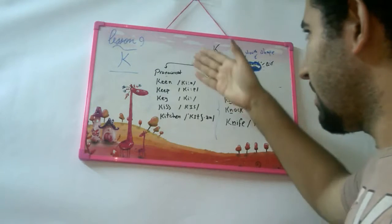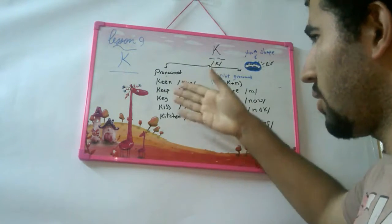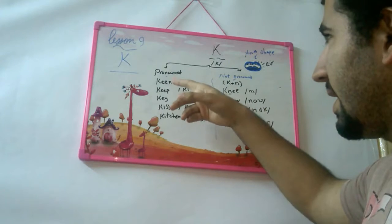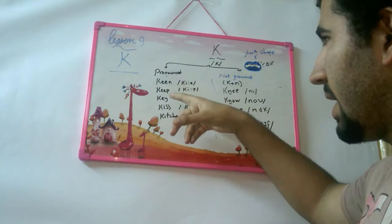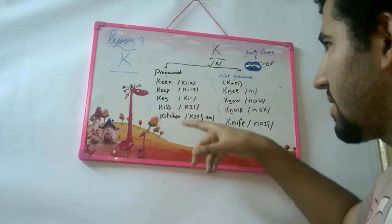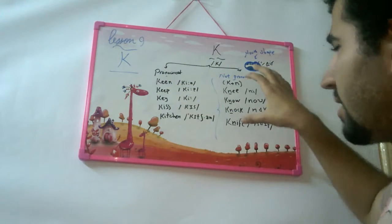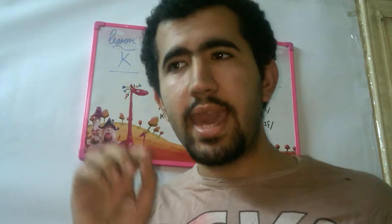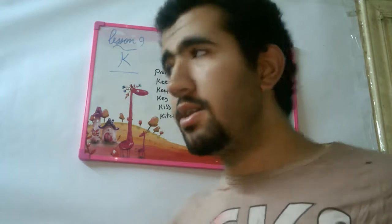The general rule is that K is pronounced when it is followed by vowels — like in king, key, kiss. But there is a special rule: when K is followed by N (K + N), the K is not pronounced.